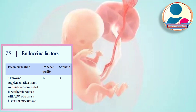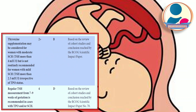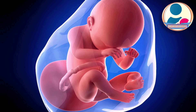Thyroxine supplementation is not routinely recommended for women with thyroid peroxidase antibodies who have a history of miscarriage. It may be considered for women with moderate subclinical hypothyroidism where TSH is above 4 mIU/L, but is not routinely recommended for mild subclinical hypothyroidism where TSH is above 2.5 mIU/L, irrespective of thyroid peroxidase status. Regular TSH measurements from 7 to 9 weeks of gestation are recommended in cases of subclinical hypothyroidism or with positive thyroid peroxidase antibodies.